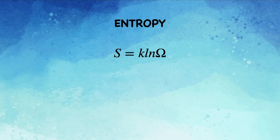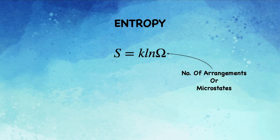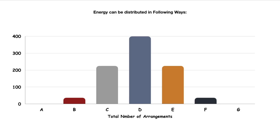Looking at the definition of entropy which says that S = k ln ω where ω is the number of arrangements, we can say that the D column has the highest entropy because it has the highest number of arrangements. So if the energy is equally distributed between A and B, it gives rise to the highest entropy.